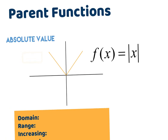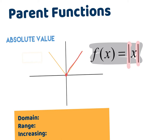The absolute value graph is first. You know it's absolute value because it has the absolute value bars in the equation. The absolute value of x by itself — the parent function — has a vertex at zero, zero as its initial point, and then it goes up one and out one in both directions. These would end with arrows, meaning it continues forever in that pattern. It is a sharp V at the bottom, so it's important that you don't round it like a parabola.